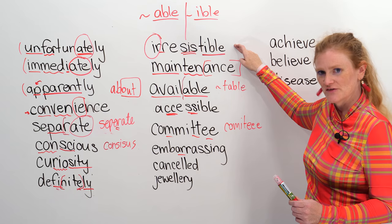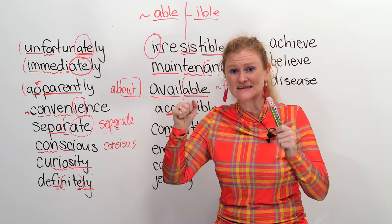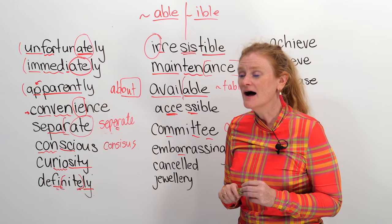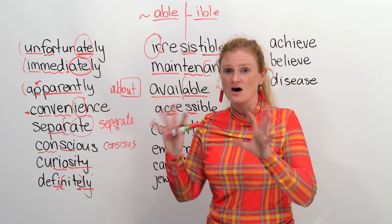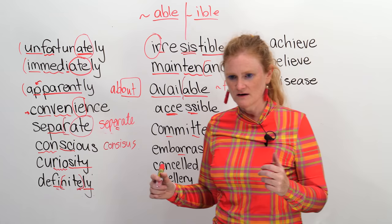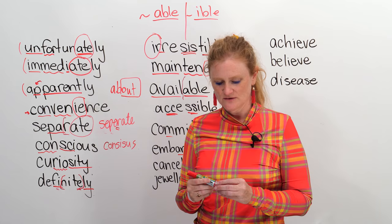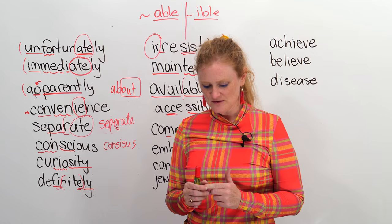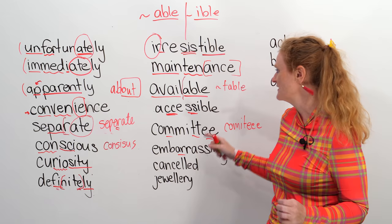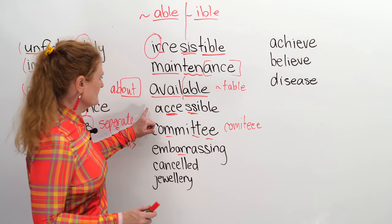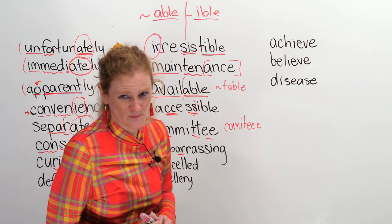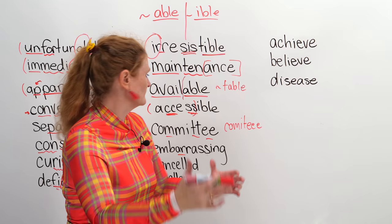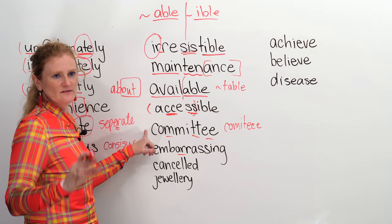If something is irresistible, it means you cannot resist it — you need it, like chocolate. Maintenance: we do this for a car. If your car's old, the mechanic likes you to bring it in to maintain your car — that means charge you extra money to keep your car in good running order. Available means you have free time or you can do something. If something is accessible, it means it's easy to get to or easy to achieve. Committee is a group of people who like to give their opinion about things.